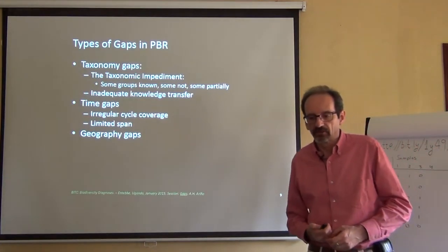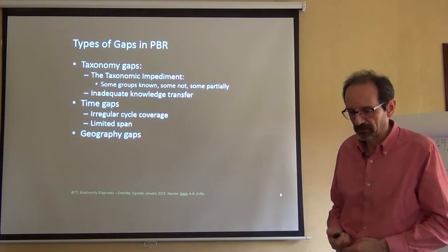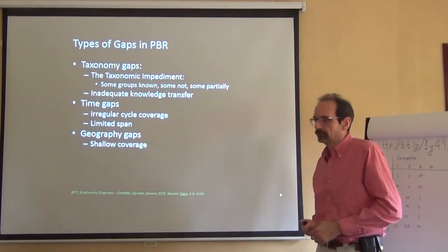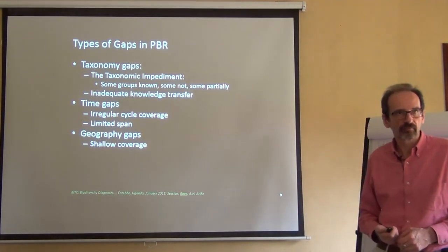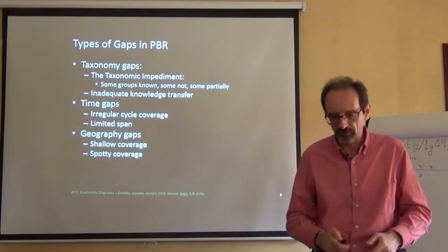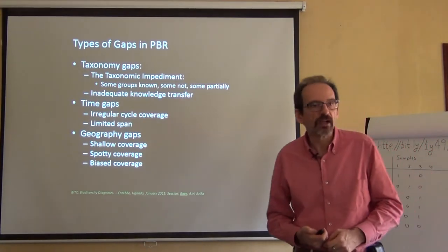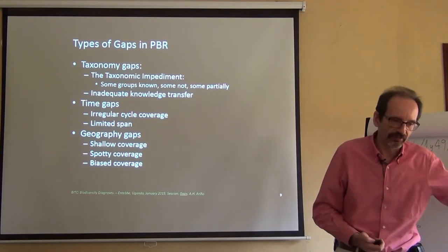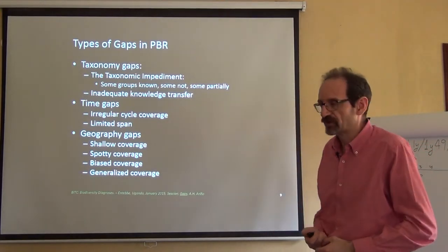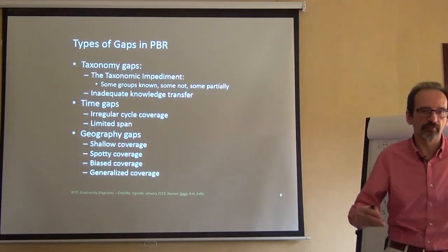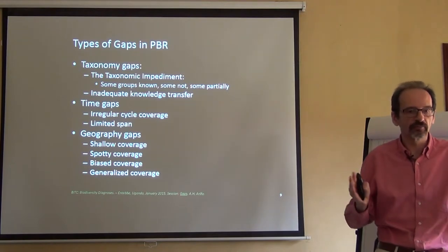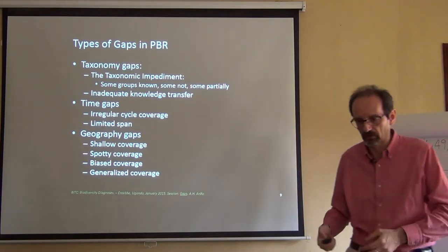Last, those are the geographic gaps that Townes explained in the previous talk, which might include shallow coverage, which might include spotty coverage, good coverage but in very few places, or biased coverage. You are leaving in the field some data that you could have collected. Or generalized coverage. You get data from very general areas that will offer you little or no information at the level of detail, at the regional or local level.